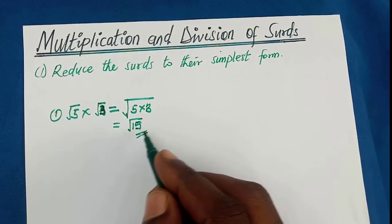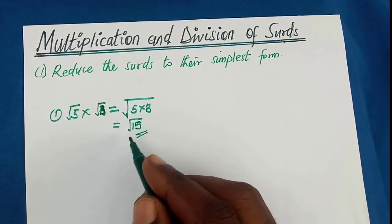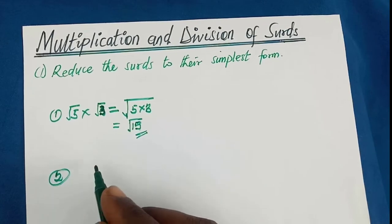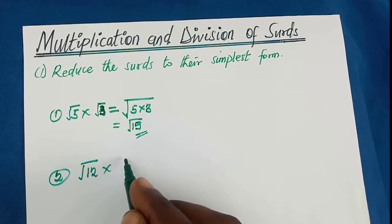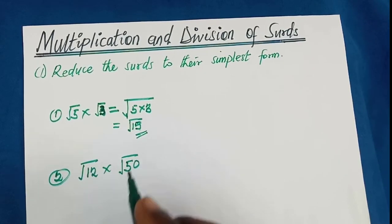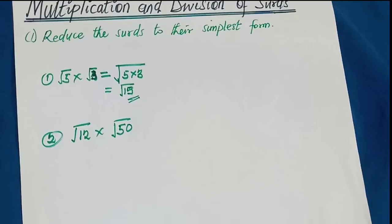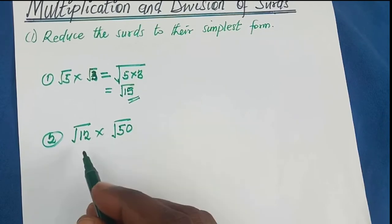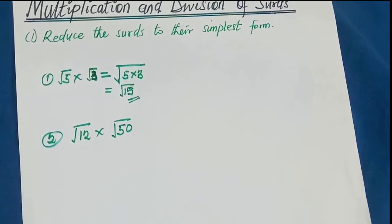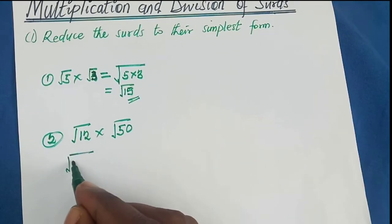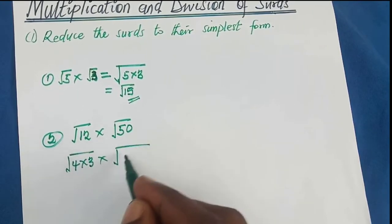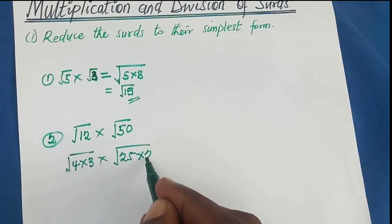Square root of 15 is already in the simplest form. Now the second example: square root of 12 times square root of 50. These two sets are not in the simplest form, so we have to reduce them. 12 is the same as 4 times 3, and root 50 will be 25 times 2.